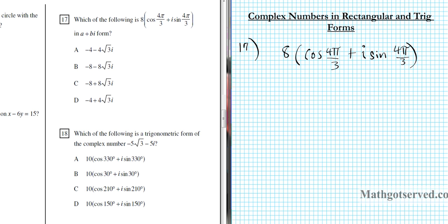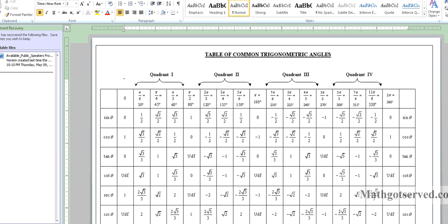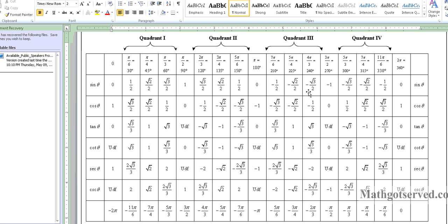Or a plus bi form. In order to do this we just need to evaluate what cosine 4π/3 and sine 4π/3 are. We're going to take a look at our table of common angles and see what those values are. You should have a copy of this sheet. Cosine 4π/3 is negative 1/2 and sine 4π/3 is negative root 3 over 2.